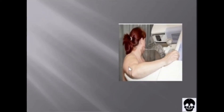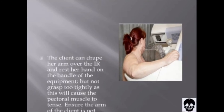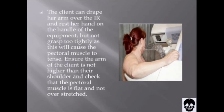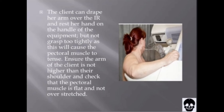The next image shows the client arm position. The client can drape her arm over the IR and rest her hand on the handle of the equipment, but not grip too tightly as this will cause the pectoral muscle to tense. Ensure the arm of the client is not higher than their shoulder and check that the pectoral muscle is flat and not overstretched.